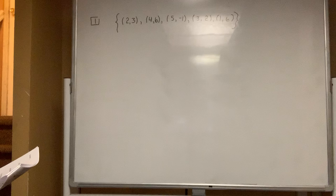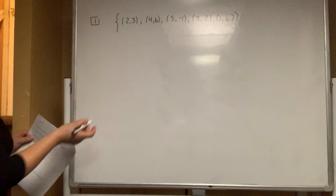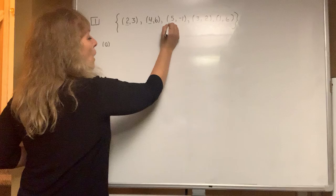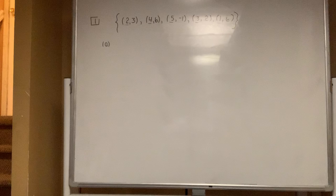All right, part A says, determine whether or not example one is a function and justify your answer. So the way you determine if it's a function when you're looking at a list of points is you focus your eyes on the x values only. If the x values do not repeat, then it is definitely a function.